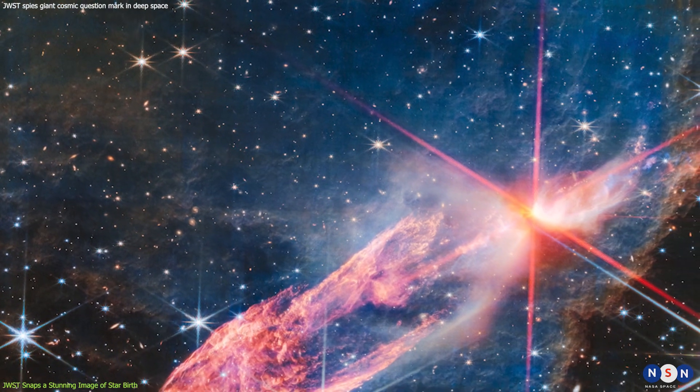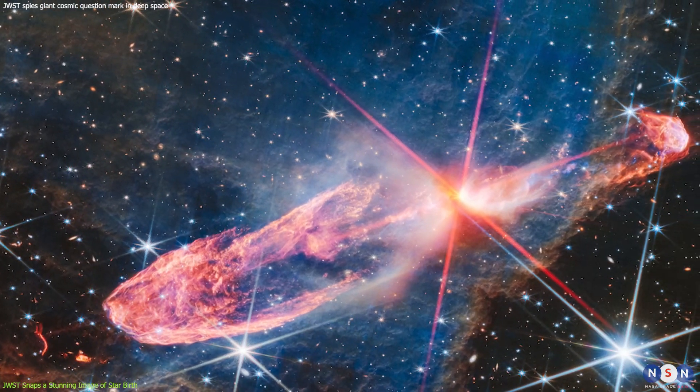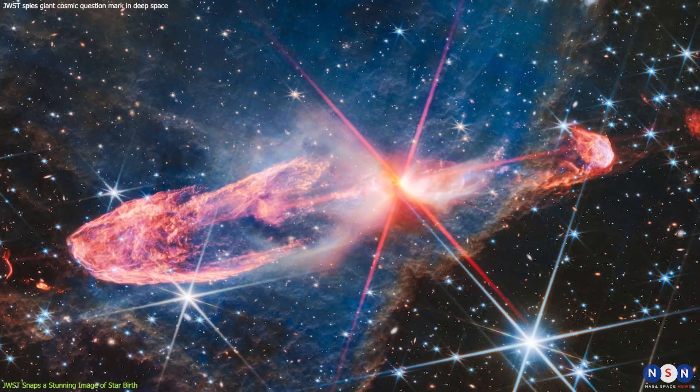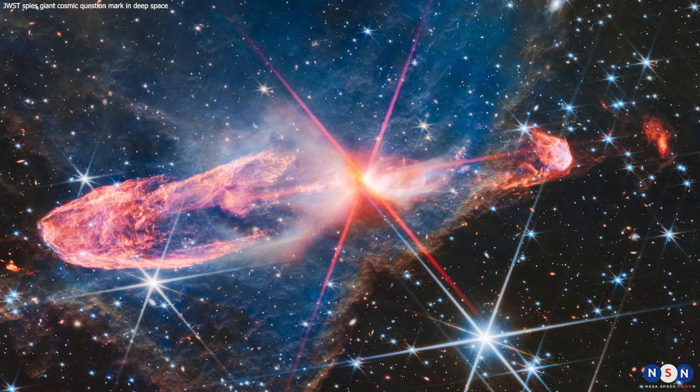By combining these filters, astronomers can create a detailed map of the physical and chemical properties of the Herbig-Haro objects, such as temperature, density, velocity, and composition. This can help them understand how stars form and evolve in different environments.